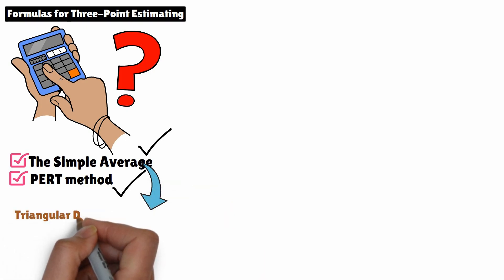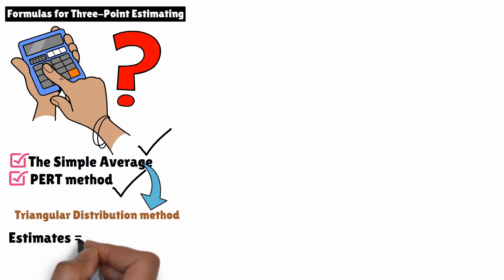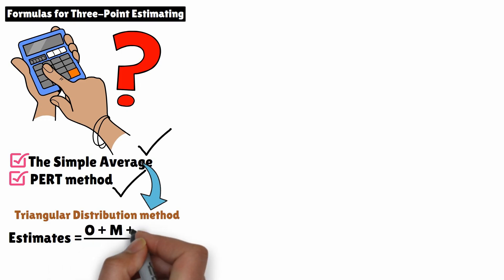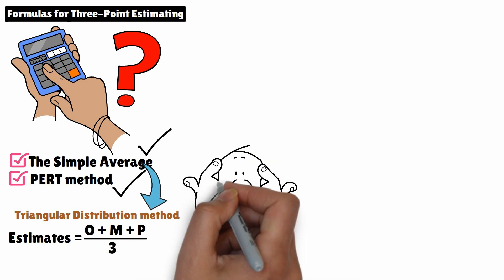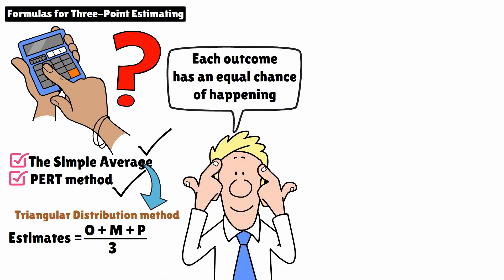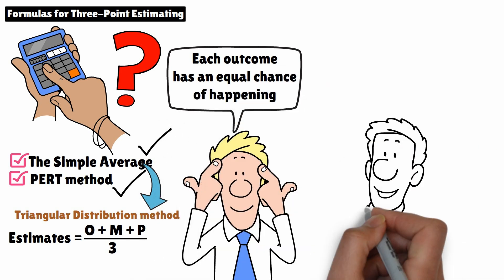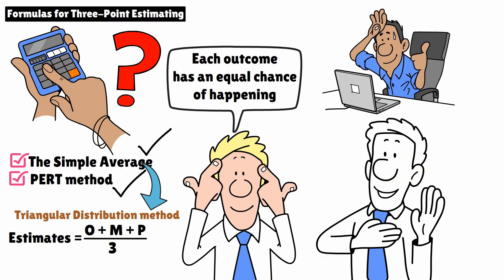The simple average, also known as the triangular distribution method, gives equal weight to all three estimates — optimistic, most likely, and pessimistic. You simply add them up and divide by three. This method assumes that each outcome, whether optimistic, most likely, or pessimistic, has an equal chance of happening. It's straightforward and works well when you don't want to favor any particular scenario over the others.